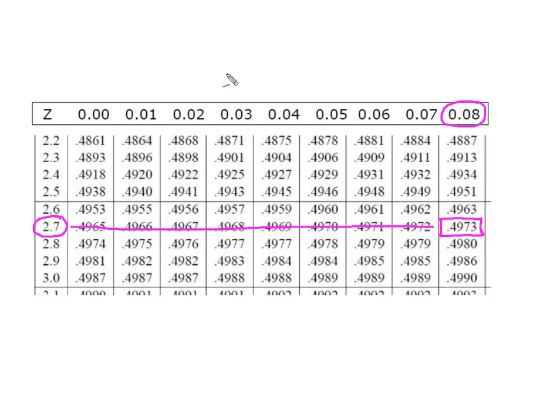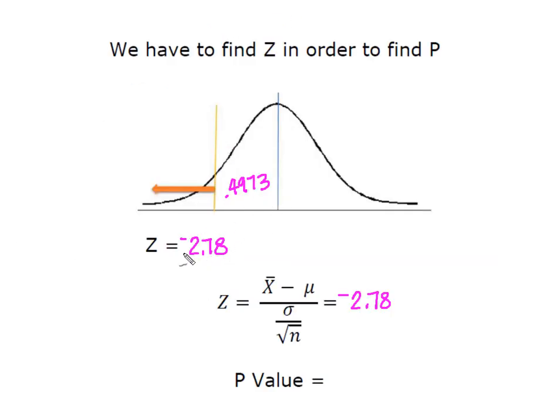And what this normal distribution table shows is it shows us the area from z back to the mean. So now I know that 0.4973 is this area here. So I'm going to have to subtract it from 0.5 to get this area here. So our z-score is negative 2.78. That gave us 0.4973 here. So here this area in the tail is our P-value. So I'm going to take 0.5 minus my 0.4973. And that's going to give me 0.0027.